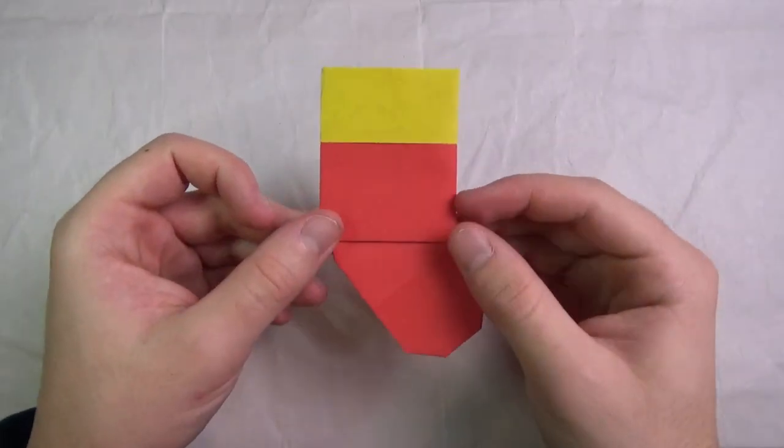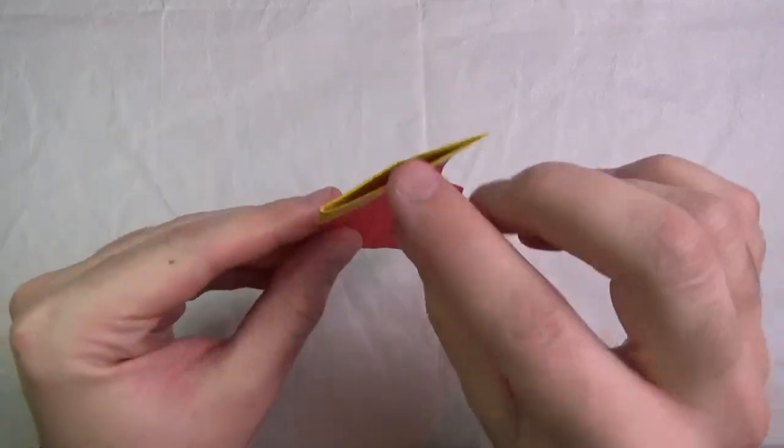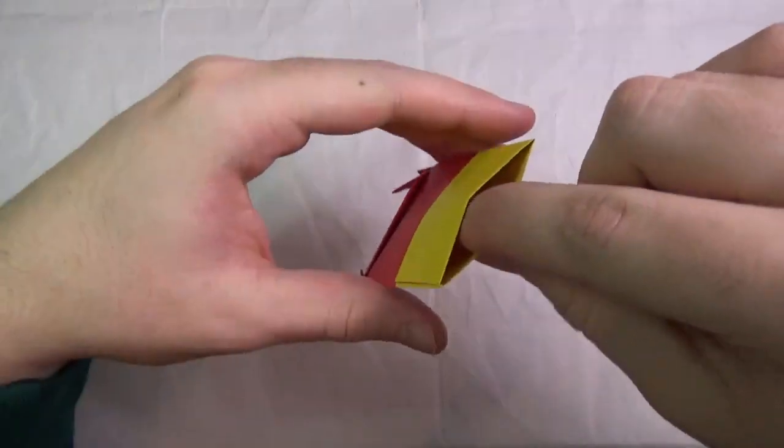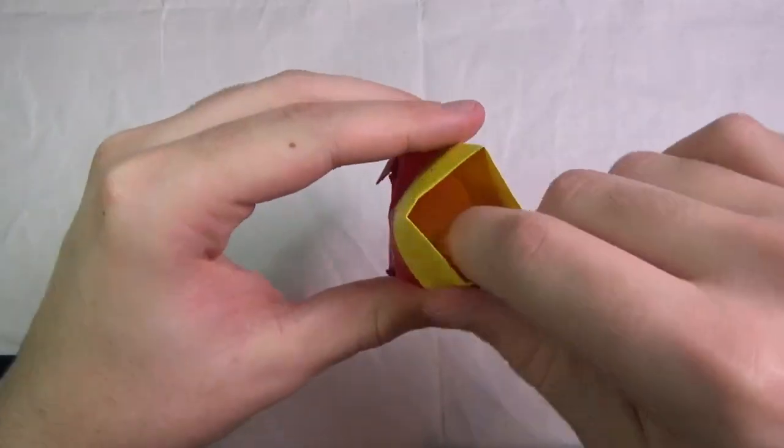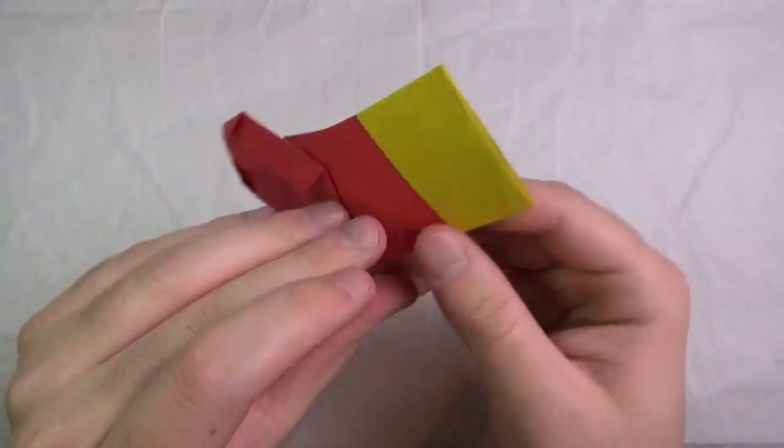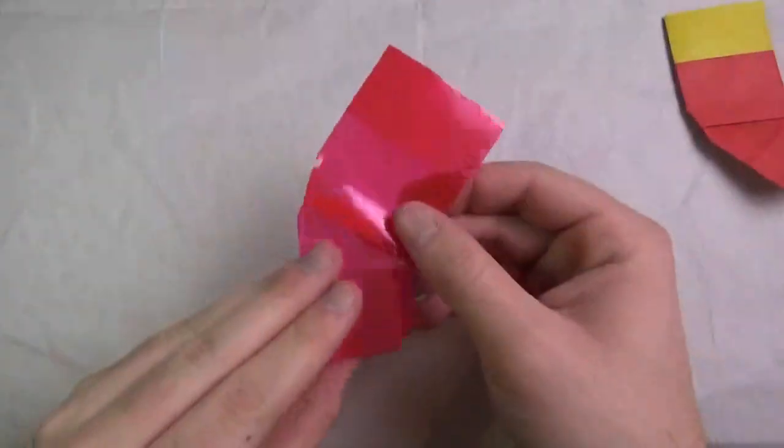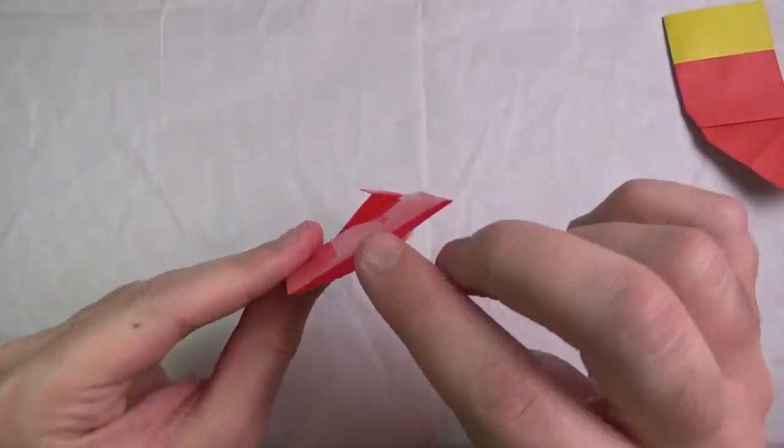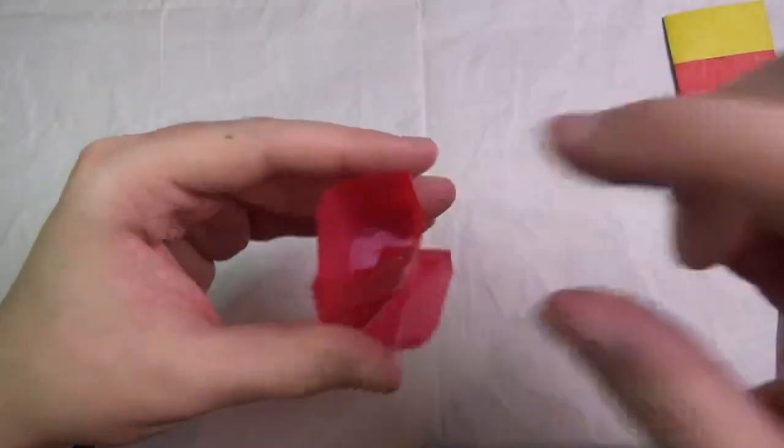Alright, so here's the model up close. So here is the stocking and you can open the top of it up like this. You can put stuff like candy in there. It looks really nice. And here's another one I made. And I'm going to show you how to fold it.